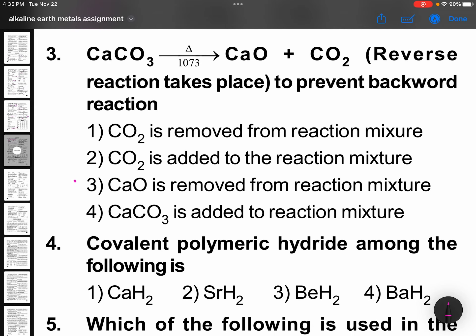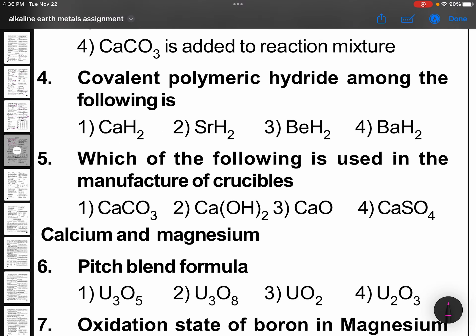Calcium carbonate on heating produces CaO plus CO2. Reverse reaction takes place. That means this is also possible in closed container. To prevent backward reaction, what we need to use is to remove carbon dioxide immediately. Carbon dioxide is removed from reaction mixture. This point we will discuss in equilibrium topic.